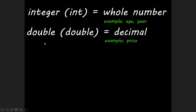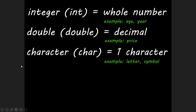A double will store a decimal — an example would be a price — and you just write double before the variable name. The name 'double' has to do with double floating point precision. Think of double as a decimal, so you can store something like a price — anything that contains a decimal portion. The character data type, sometimes referred to as char, will hold a single character like a letter or a symbol.